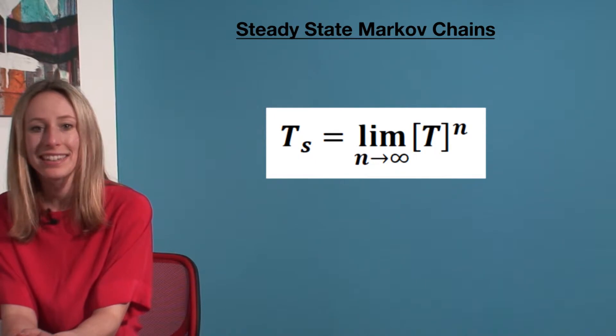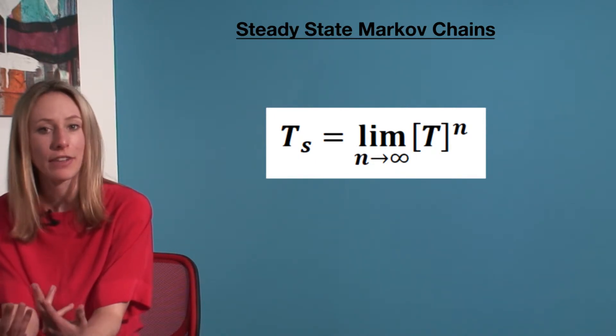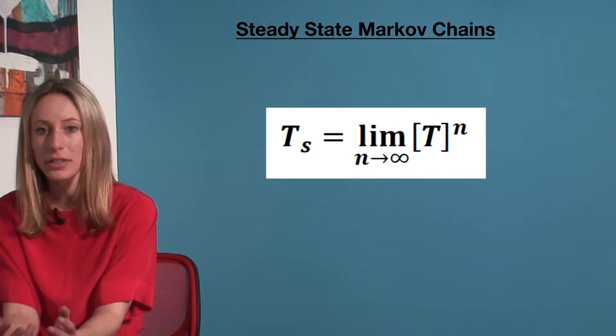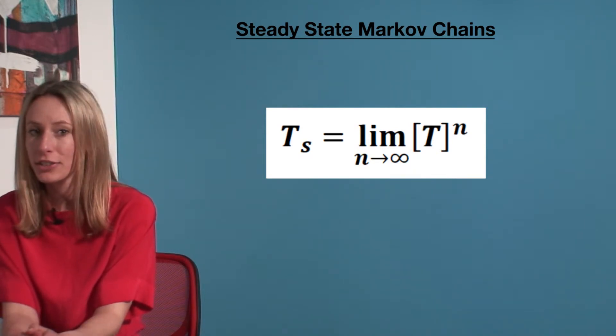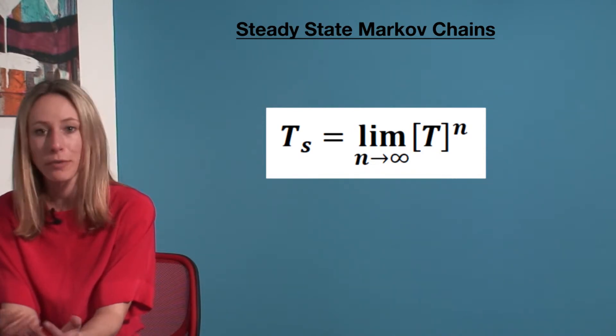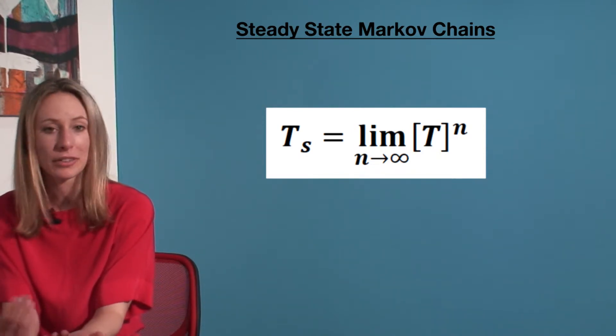Basically, if we keep multiplying the initial state vector like we showed in the last video, the initial state becomes less important. The conditional probability transition matrix decides the likelihood over a large period of time whether the system is in state one or zero.